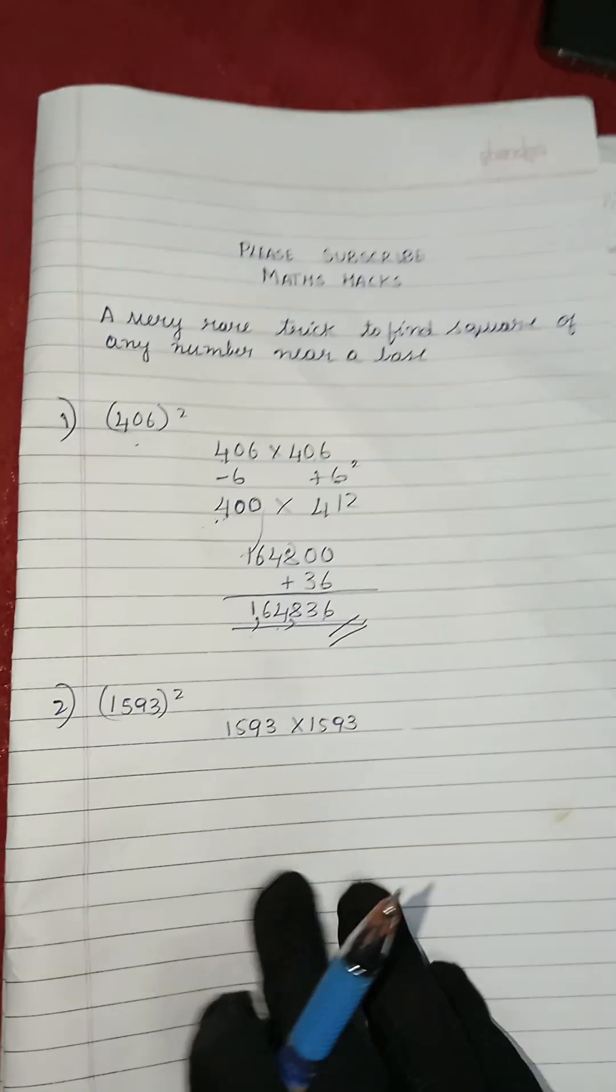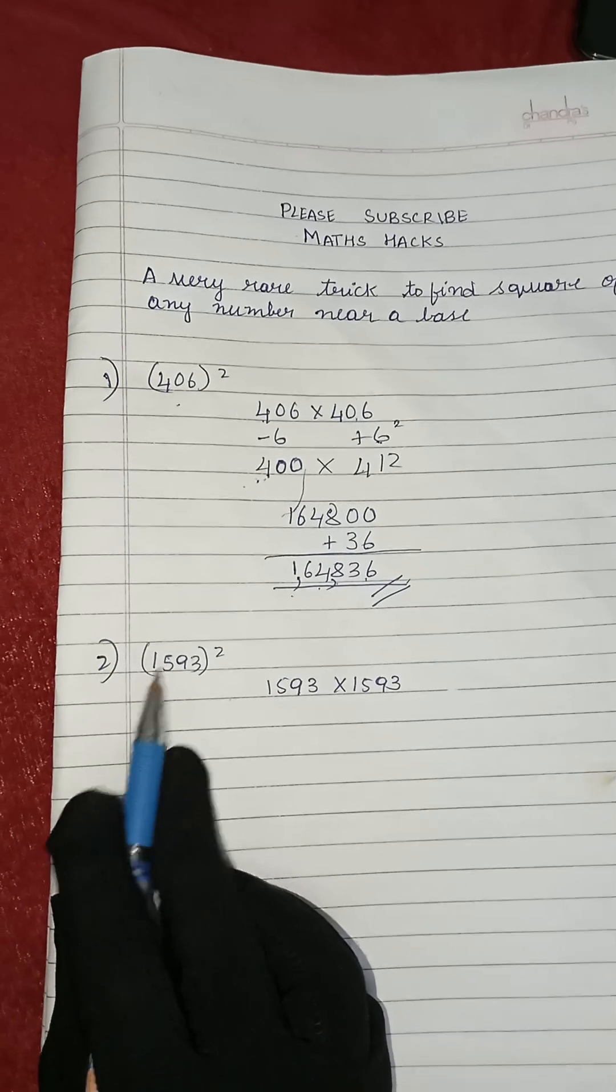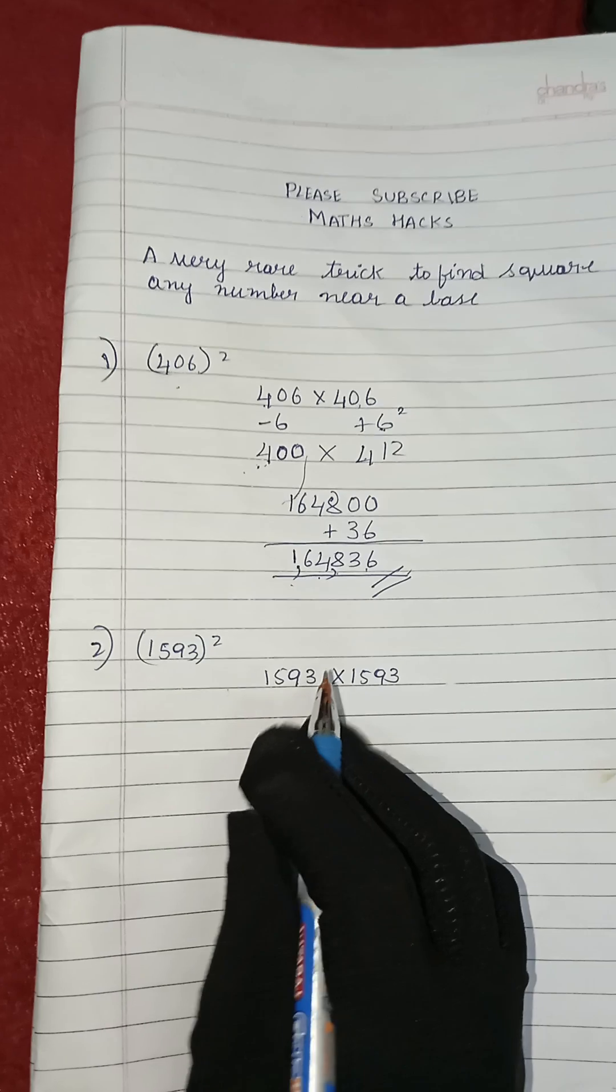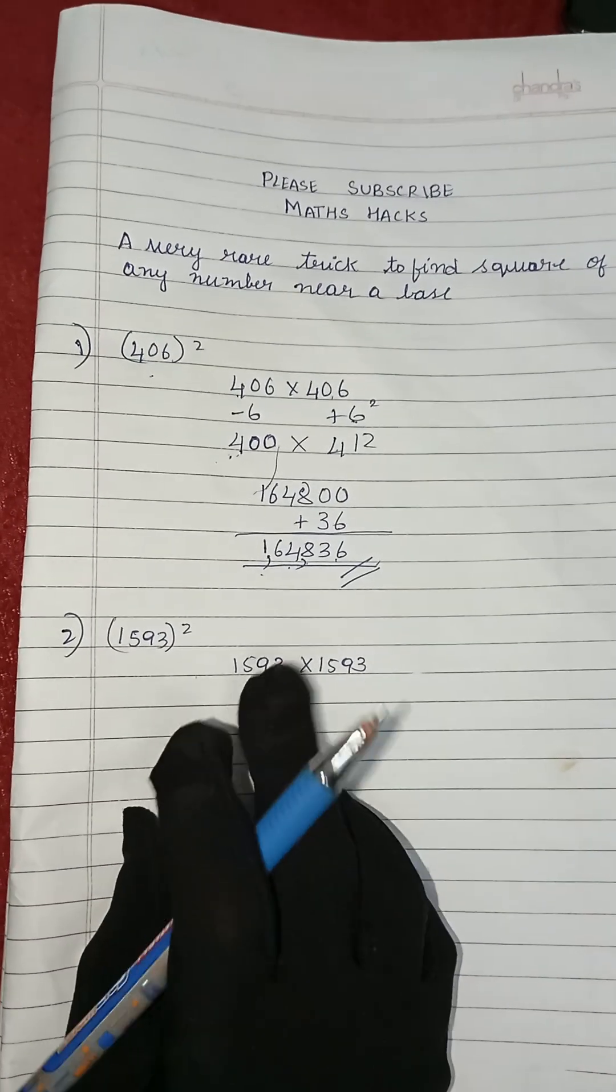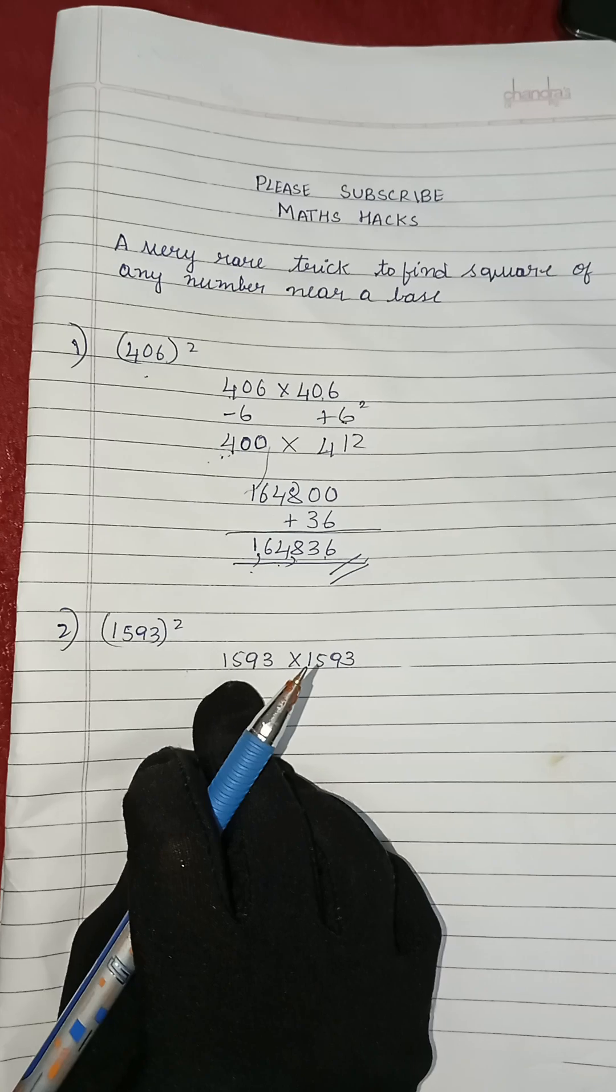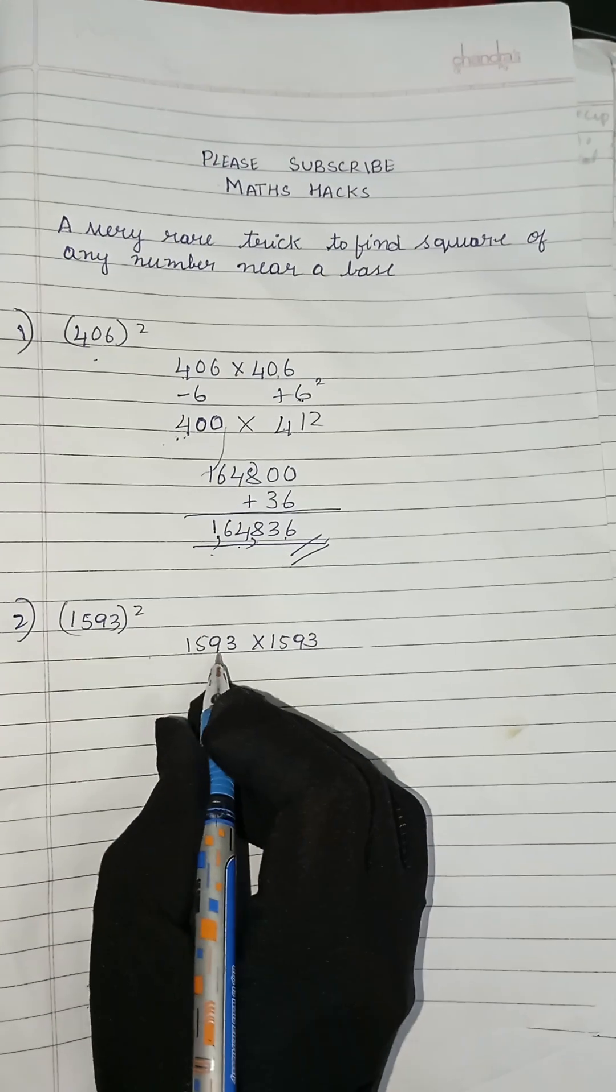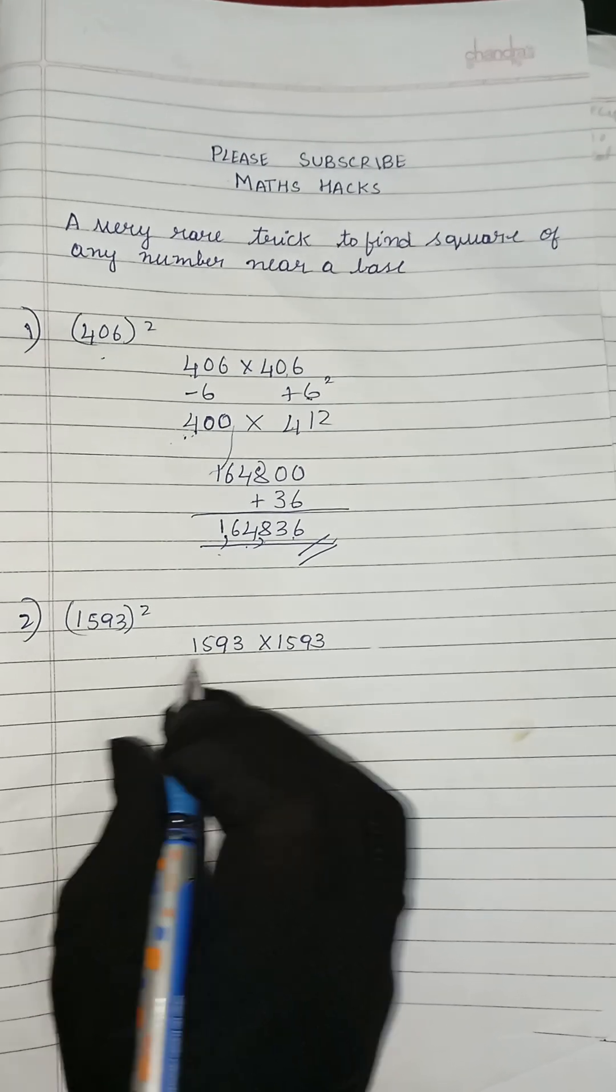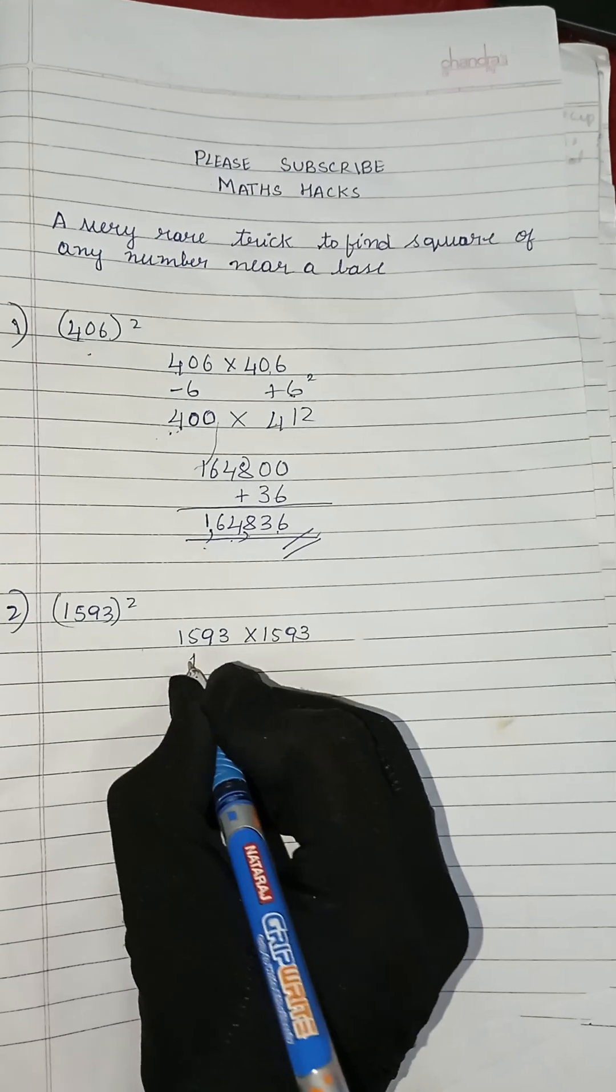Now let us solve the second question in the same way. This is our question: 1593 whole square. We will round off this 1593, so 1593 is closest to 1600.